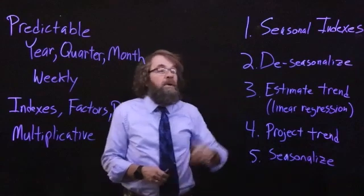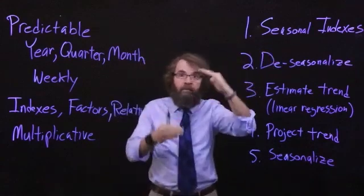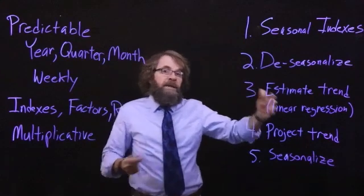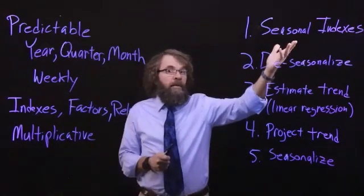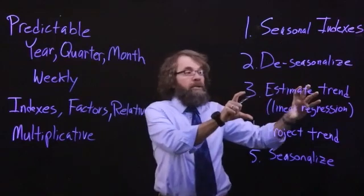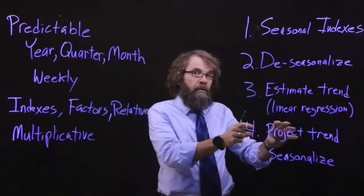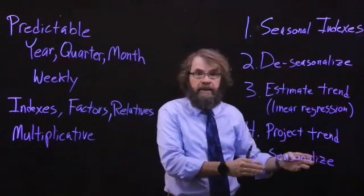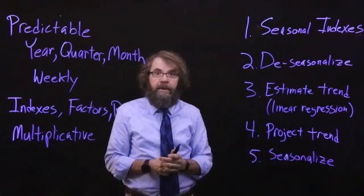So to recap: calculate the seasonal indexes to see how much a particular period is above or below what we would otherwise predict. Then take seasonality out of the model by dividing the original numbers by the seasonal indexes. Then do a linear regression on the de-seasonalized numbers. Project that linear regression into the future, and then multiply it by the seasonal indexes to get our final forecast. I hope this has been helpful.